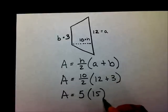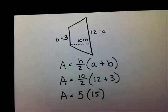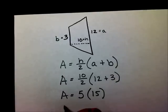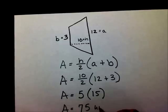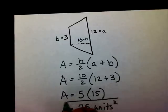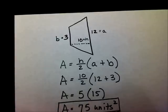Now, what you need to do now, you need to multiply 15 times 5. And that's going to give you 75, I hope you remembered, units squared.